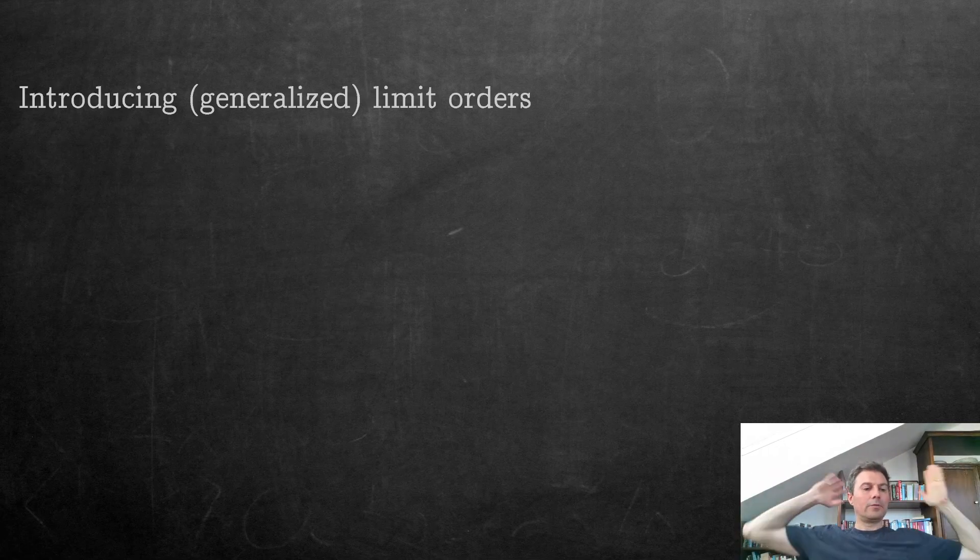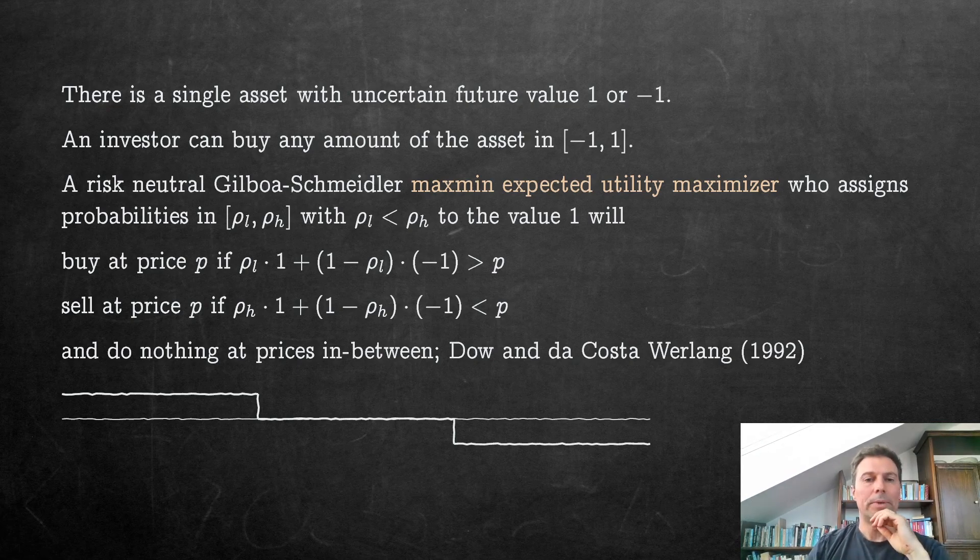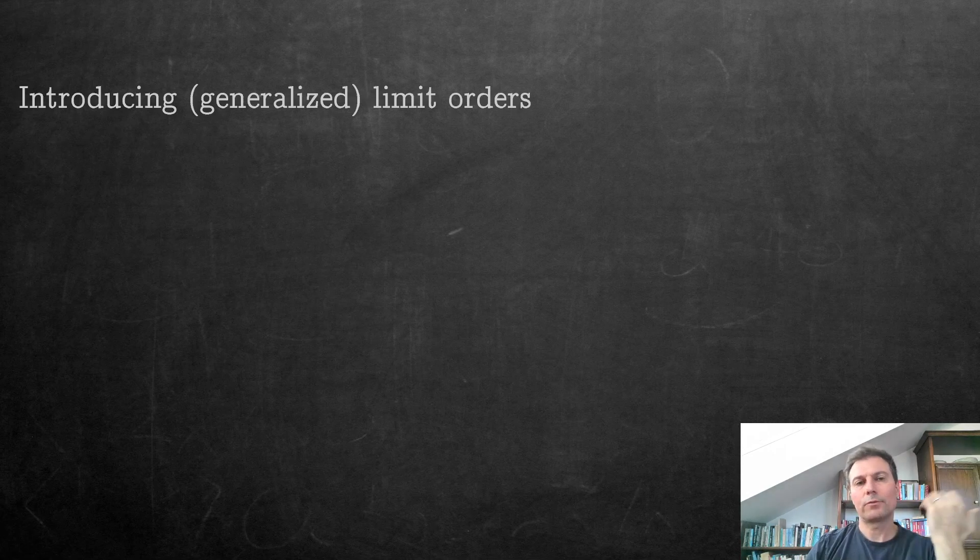Now I want to argue that if you introduce limit orders, this latter demand function is actually dominated. So what do we mean by that? How do we have to think about what does it mean to have a limit order? What is a limit order?